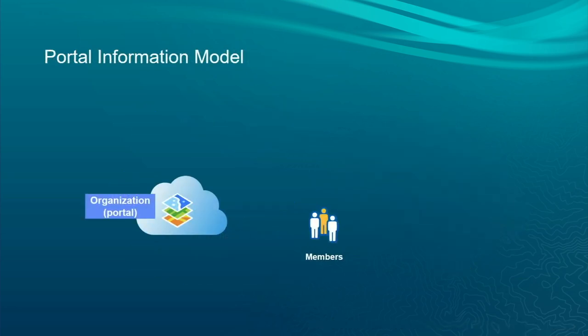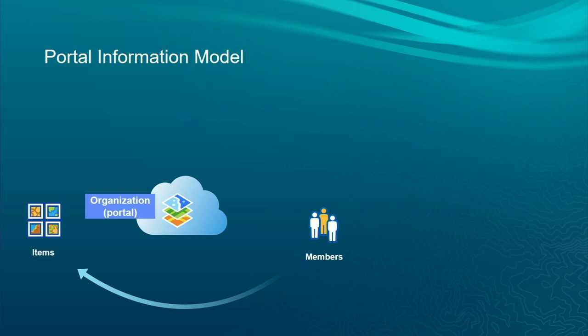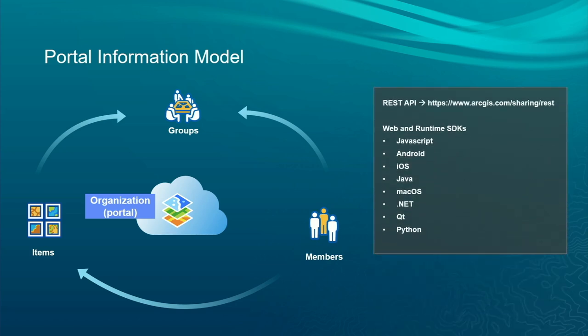The first thing we'll start with is the portal information model. At the heart of it is the ArcGIS Online organization — your organization is called portal in the APIs. The organization itself has members, and members own items: maps, apps, and layers. Members work together in groups, bringing their items together. Groups make it possible to share content with a specific set of people and to work together on content.